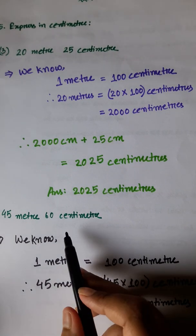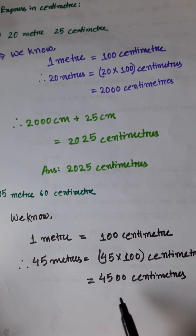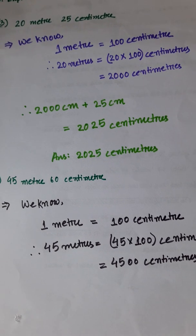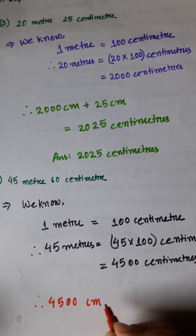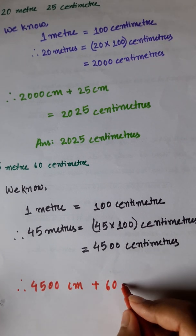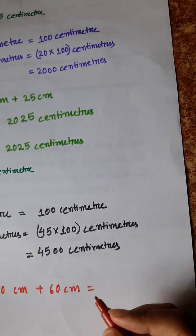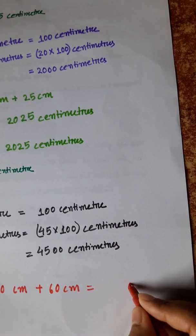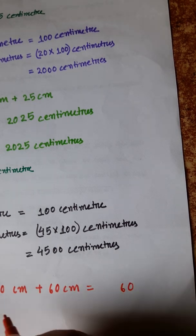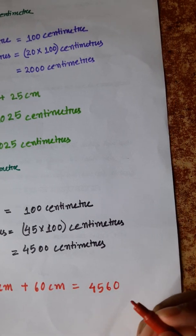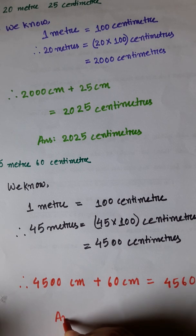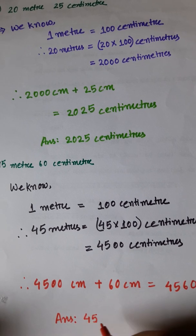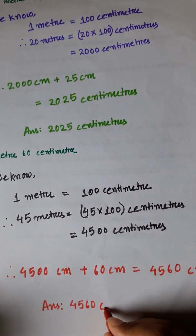We have 60 centimeters more, so now we will add 60 with 4500 centimeter. 4500 centimeters plus 60 centimeters is equal to 4560 centimeters. So the answer is 4560 centimeters.